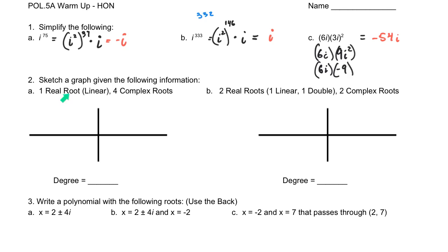So, you're asked to sketch a graph given the following information, so you have one real linear root and four complex roots. Obviously there's lots of different ways that can happen, I'm just going to choose an x-intercept, that's going to take care of that one linear root. And so then as I sketch my graph here,